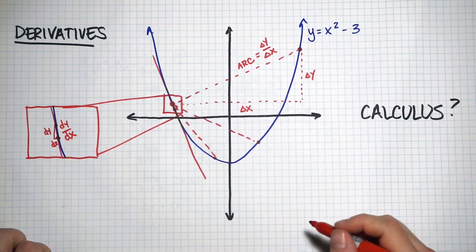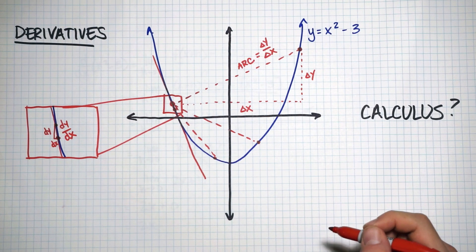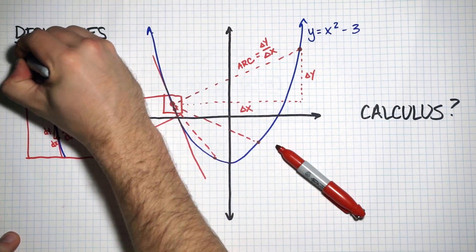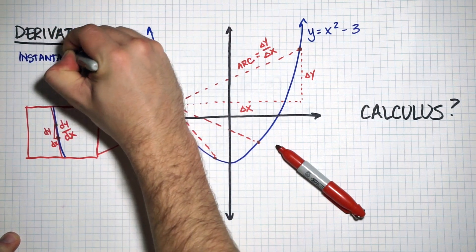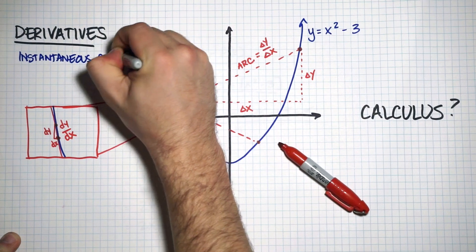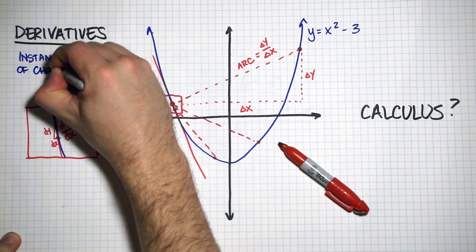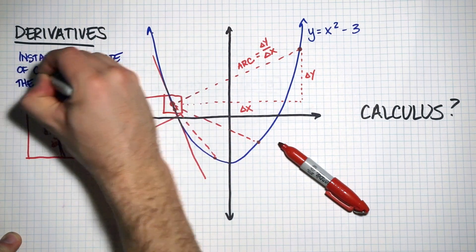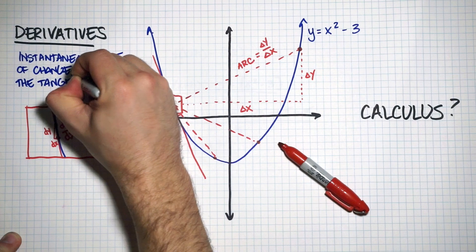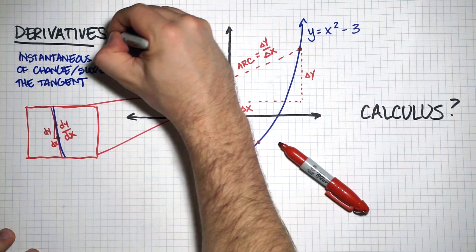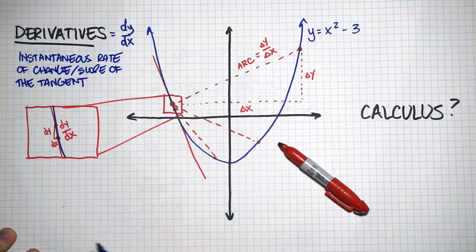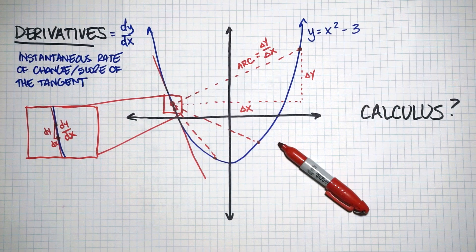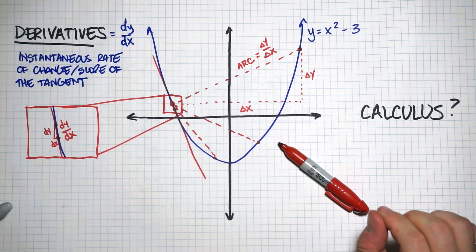The slope of the tangent we represent as dy by dx instead of delta y over delta x, and this is the common notation for a derivative. A derivative is just a fancy word for the instantaneous rate of change of a function, or the slope of the tangent. The derivative equals dy by dx — a small, tiny change in y over a small, tiny change in x — basically the slope of the tangent when we zoom in really, really close.